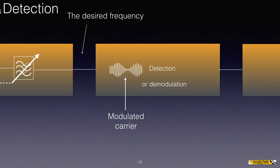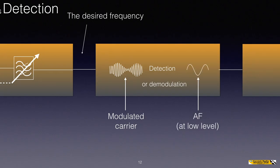Then we move on to detection, otherwise called demodulation. The desired frequency will be a modulated frequency — there an AM modulated wave is shown. As mentioned, if you look at the transmitters video, this will be clearer. The purpose of detection or demodulation is to recover only the AF signal — either the speech or the music — which is superimposed on the carrier. Some circuitry takes off the underlying AF signal, but this is still at fairly low level. This underlying AF signal, with the carrier stripped away, is passed on to the next stage.